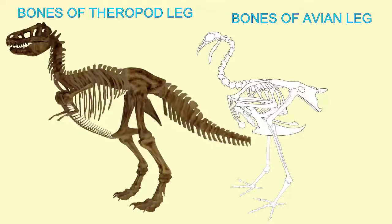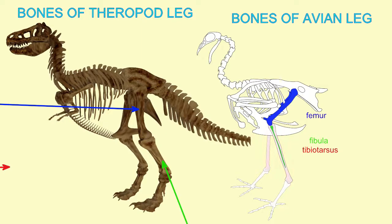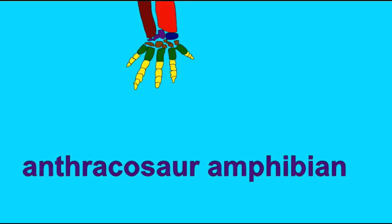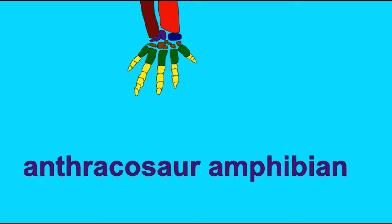To understand where the terms tibiotarsus and tarsometatarsus originate, one needs to consider the lower legs of the theropod dinosaurs, which were the ancestors of birds. The organization of the theropod leg is very similar to that of modern birds.